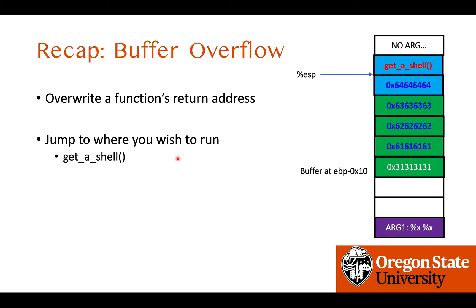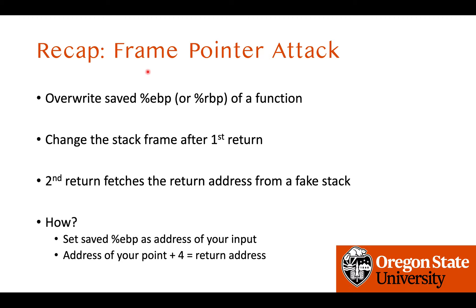Before we start, let's do a recap of the previous lecture. We learned how to exploit a buffer overflow vulnerability. To do that, we need to locate the vulnerability that receives user input larger than the buffer size to override a local variable, saved EBP, or the return address on the stack. We then put data longer than the buffer can contain to override the return address, changing the program's control flow to the get_shell function, which spawns a privileged command line shell so you can run cat flag to read the flag.